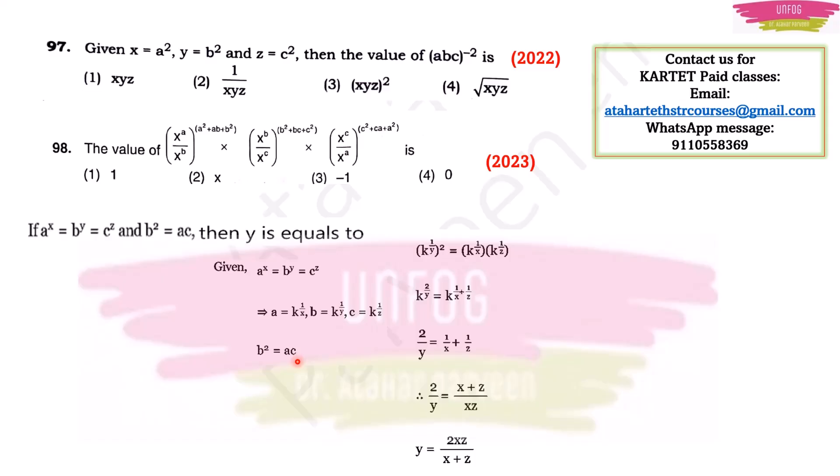In the right hand side, you have A into C. Value of A is K to the power 1 by X and C value is K to the power 1 by Z. We substituted here that also and you can add the powers 1 by X and 1 by Z because there is a multiplication. These are laws of indices. If you have A to the power M into A to the power N, then you can add the powers. You can write it as A to the power M plus N. With this, your bases are same. You have K in the base in the left hand side and K in the base in the right hand side. So you can treat the powers. You have 2 by Y is equal to 1 by X plus 1 by Z.